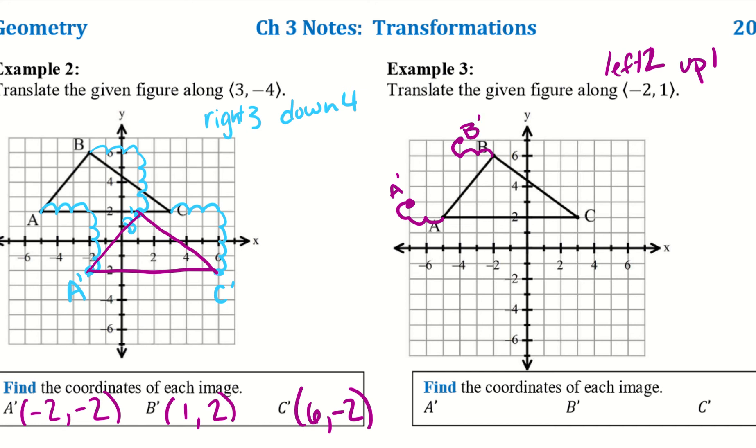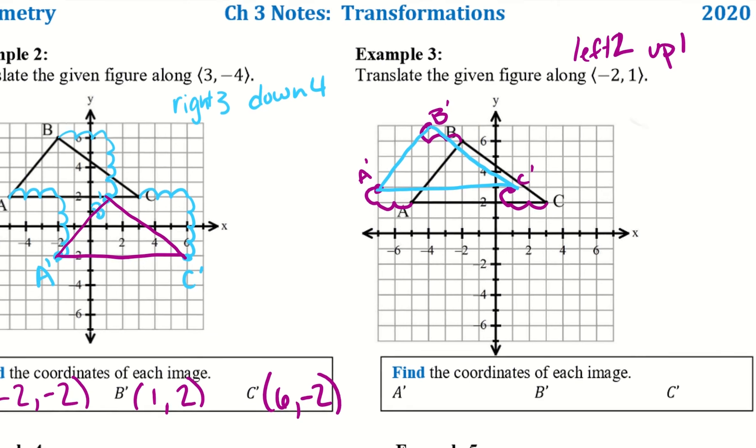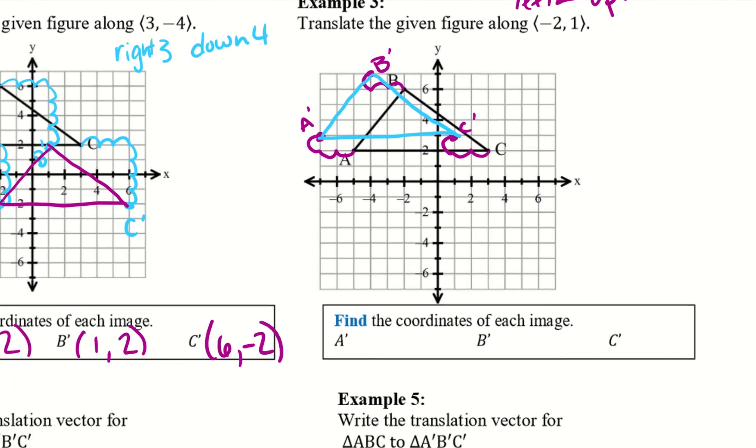There's my B prime. C, left 2, up 1, C prime. So then I can go ahead and connect the dots. So there's my new triangle. So we'll go ahead and put the coordinates. So A prime, we're all the way at negative 7 for our X and positive 3 for Y. B, we're at negative 4 and positive 7. And then C, we are at 1, 3.